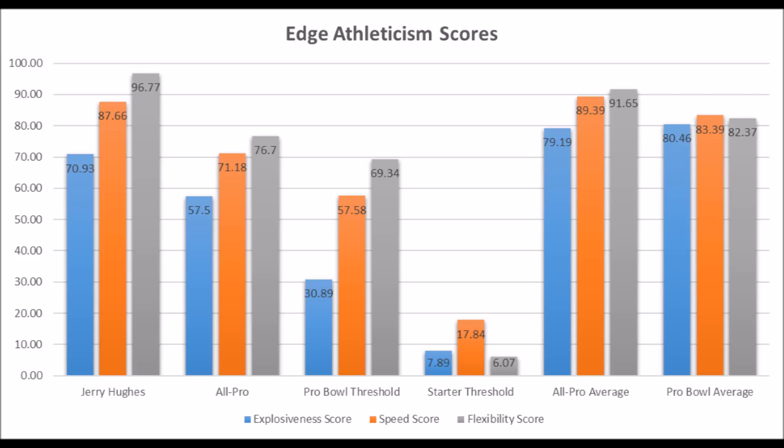Looking at Jerry Hughes' size profile, there are other similarities as well. Jerry Hughes is about six foot two, 250-plus pounds; Harold Landry is also about six foot two, 250-plus pounds. By far, this is the best data comp I could possibly come up with.